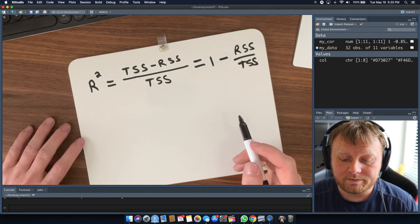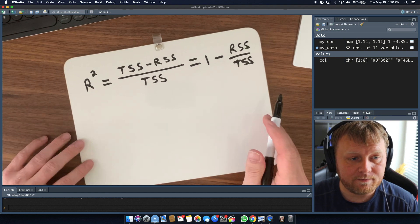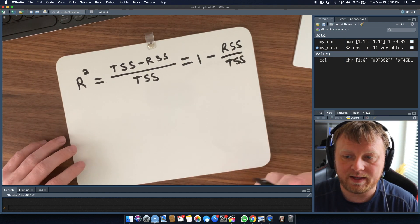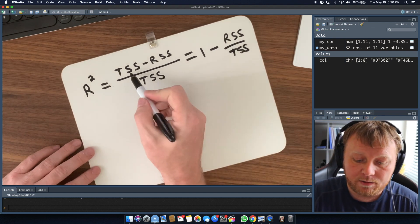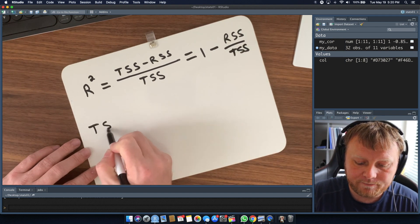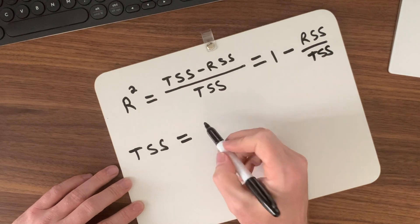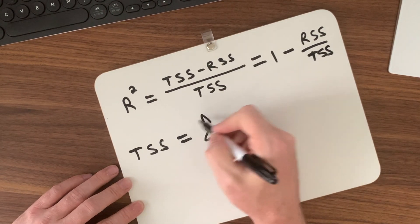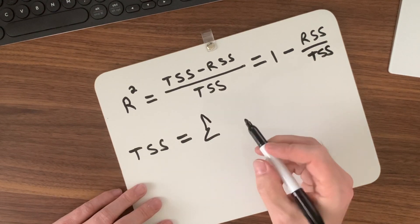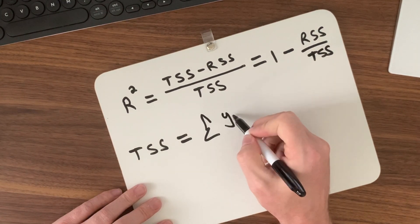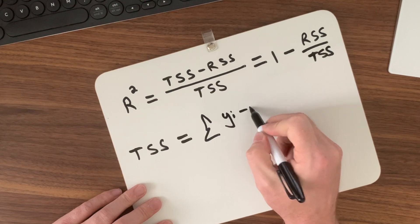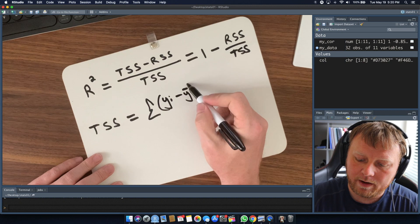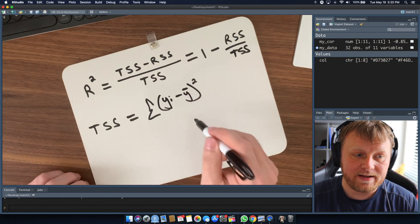What you want to do is figure out what all this means. So what is TSS? It's the Total Sum of Squares. Another way to write TSS is using a summation: the sum of all of the Y-i values minus the average Y — that's what the bar over Y means — squared.